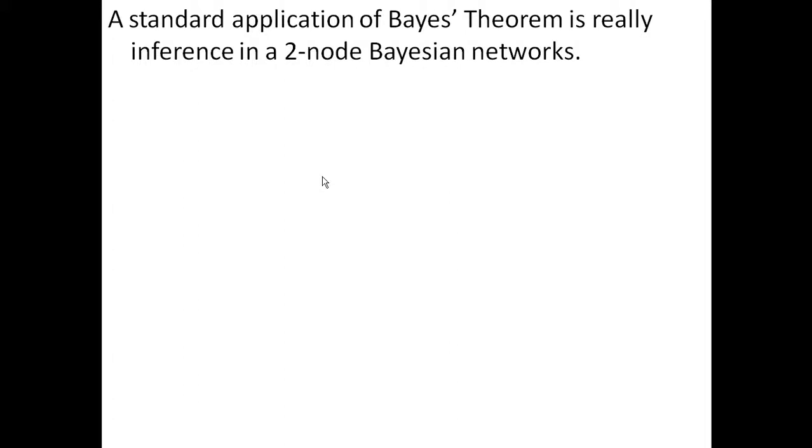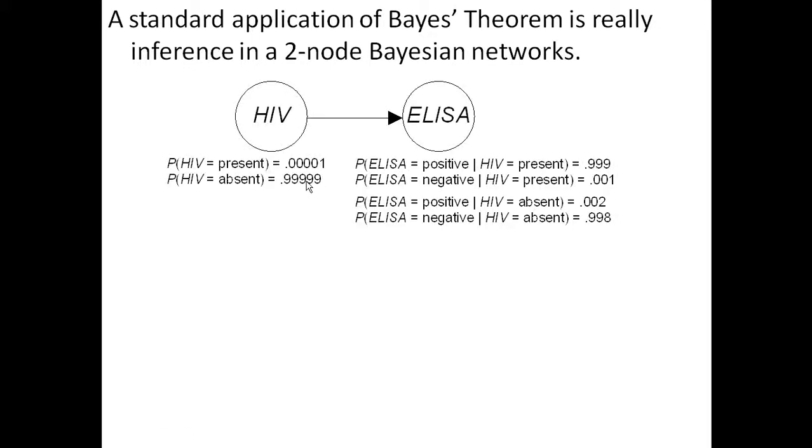Let's look at a simple application of inference. Any application of Bayes' theorem is really inference in a two-node Bayesian network. Let's look at the HIV example again.